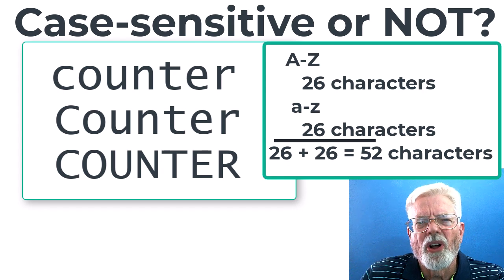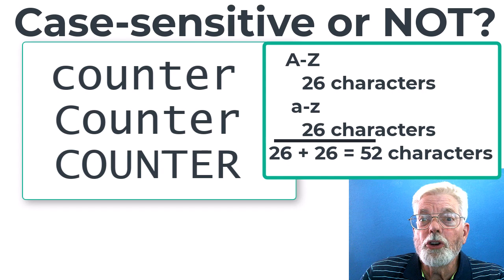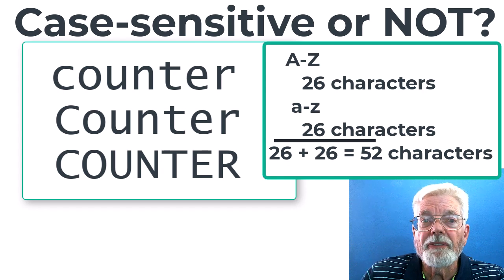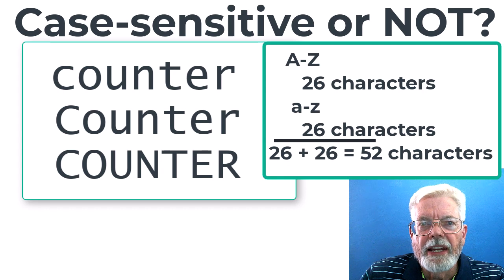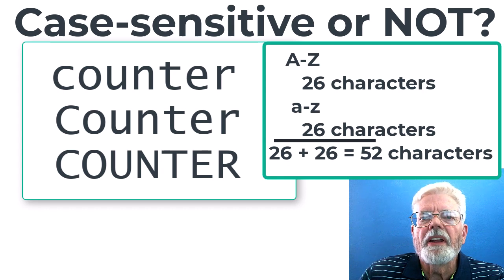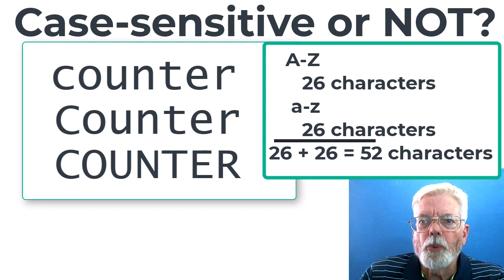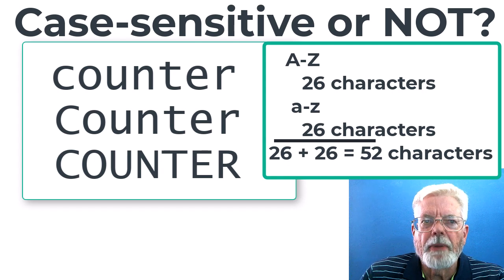For example, in C++, although this is discouraged, you could have three completely different variables named counter, counter with a capital C, counter all in uppercase letters, but in Visual Basic all three names would refer to the exact same variable.